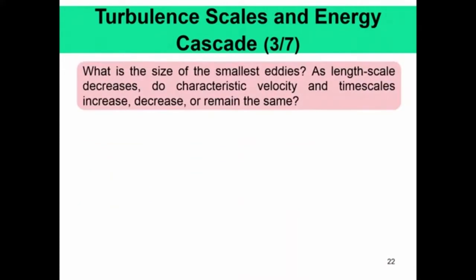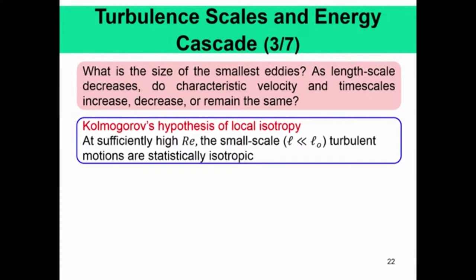Now the question is: what is the size of the smallest eddies? Are they universal in nature? How can you relate the size of the smallest eddies to those of the largest? As length scale increases, do the characteristic velocity and time scale increase, decrease, or remain the same? These are important questions to answer. The Kolmogorov hypothesis of local isotropy addresses this. We will introduce three hypotheses. The first is Kolmogorov's hypothesis of local isotropy, which states that at sufficiently high Reynolds number, the small scales of turbulent motion away from the walls are statistically isotropic.